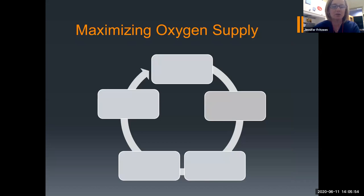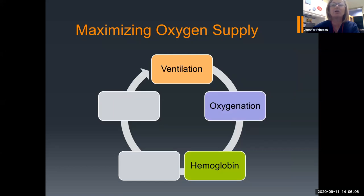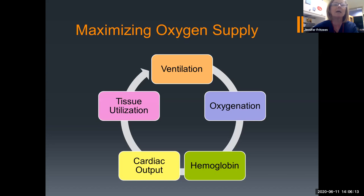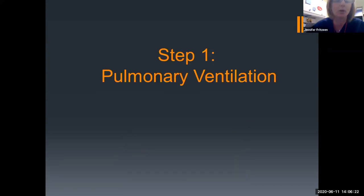Our goal as nurses, as we're taking care of our patients, is really to maximize our oxygen supply. There are five ways we can do that: maintaining ventilation, maintaining oxygenation, making sure our patients have enough hemoglobin to carry oxygen, that their cardiac output is good, and that once oxygen reaches the tissues, our tissues are at a place where they can use the oxygen that's delivered. I'm going to break this down before we really jump into all the different types of shock because this is an important first step.